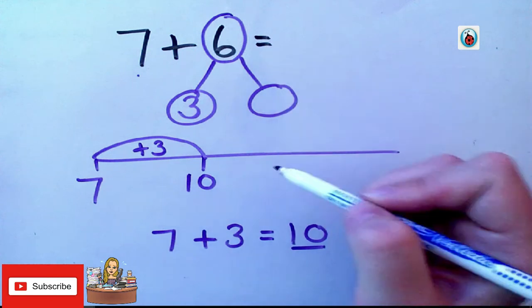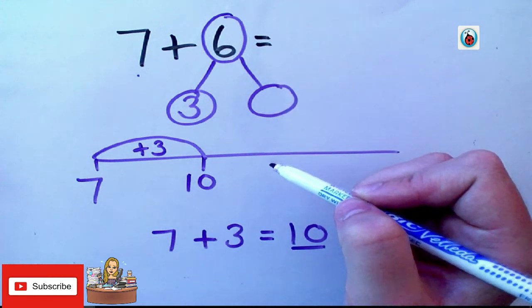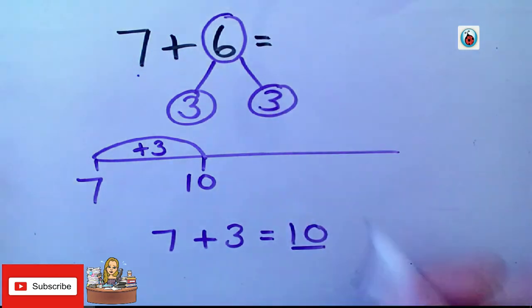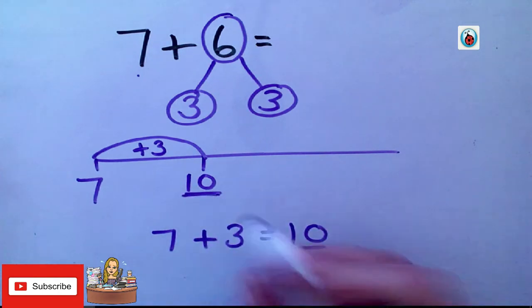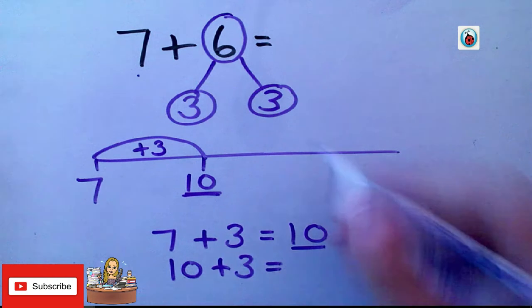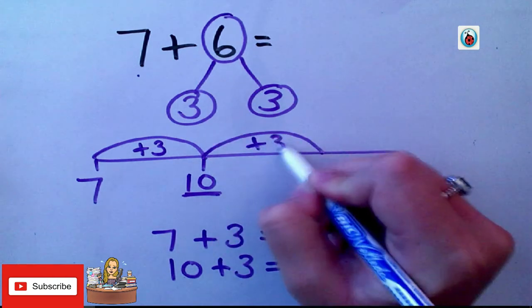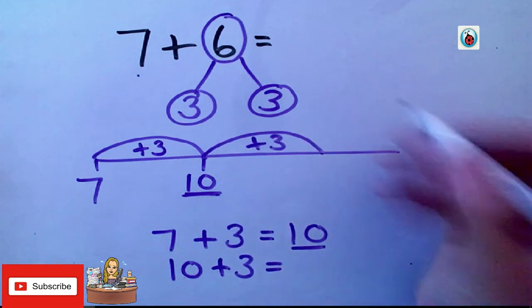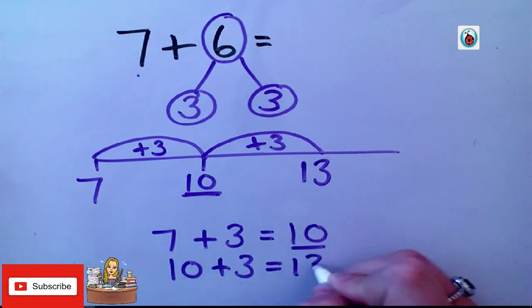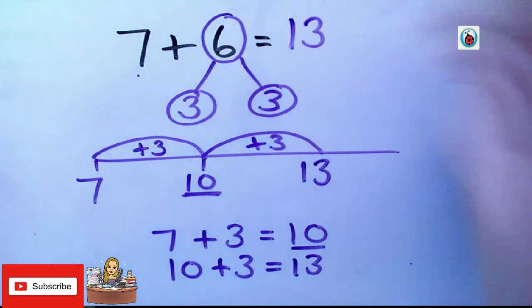3 add something equals 6. Good. 3. So, now, I start on 10. Add 3. What will that be? Again, 13. Super. So, hopefully, you got that right. Good.